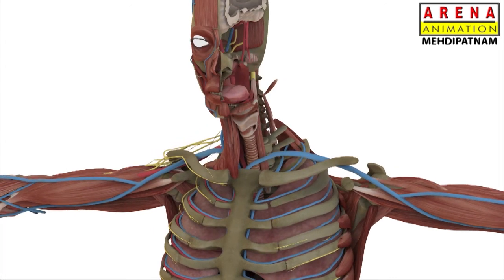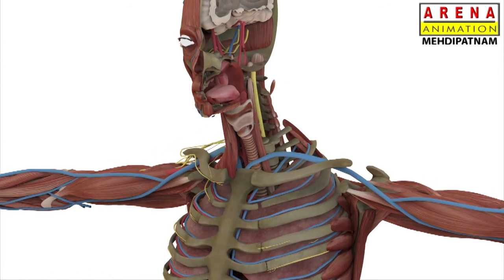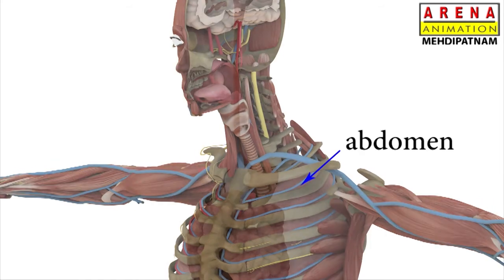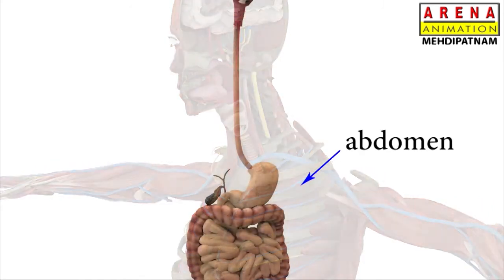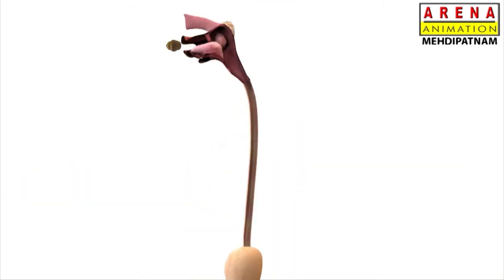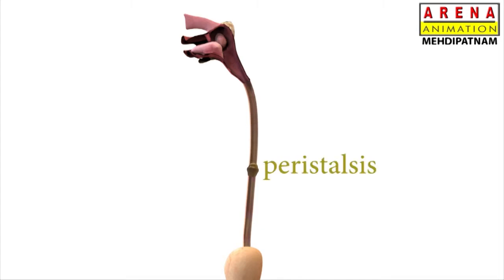It runs through the neck, behind the trachea, and opens into the stomach in the abdomen. The swallowed food is propelled towards the stomach through the esophagus by the movements of its muscular wall. These movements are called peristalsis.